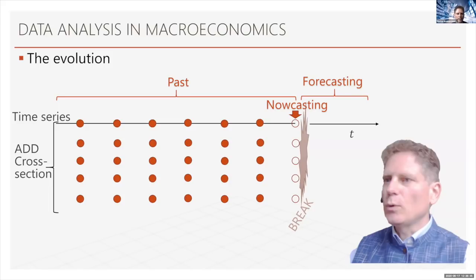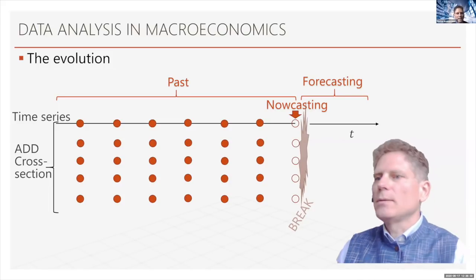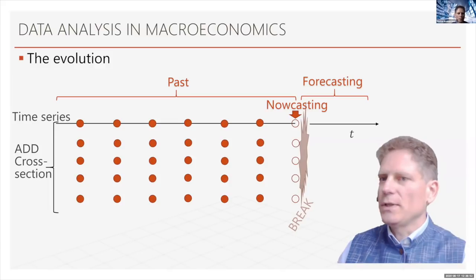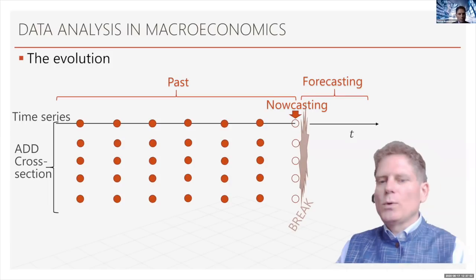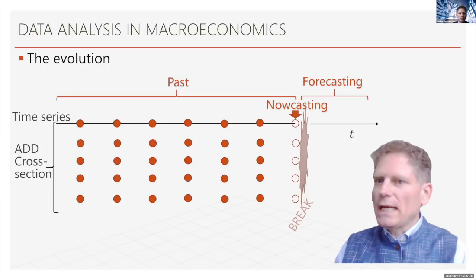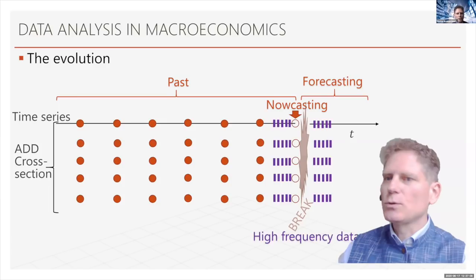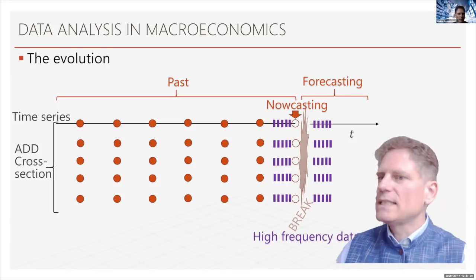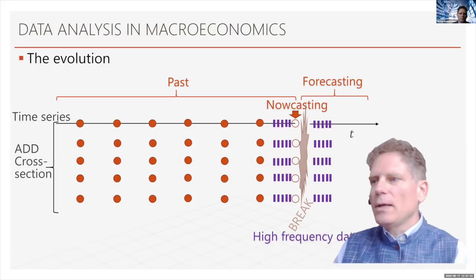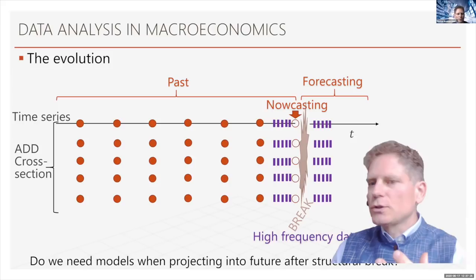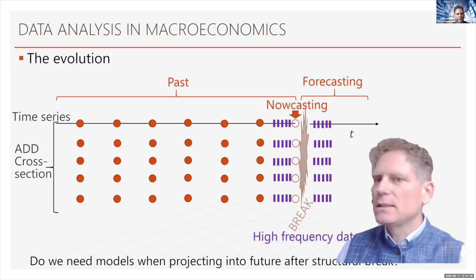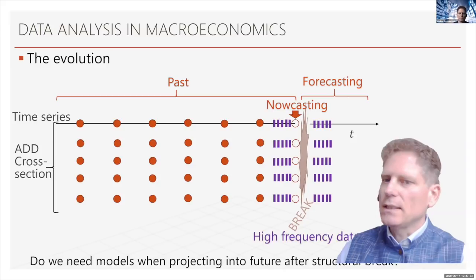Now we have a huge structural break, and the question is: what do we do once we have this structural break? We haven't observed a pandemic the same way we're observing now. The Spanish flu in 1918 is more than a hundred years ago and there's not so much data out there. The challenge for empirical analysis is much bigger. The proposal that Raj and others make is to look at high-frequency data just around this event — can we observe daily or even higher frequency data and get insights from that?